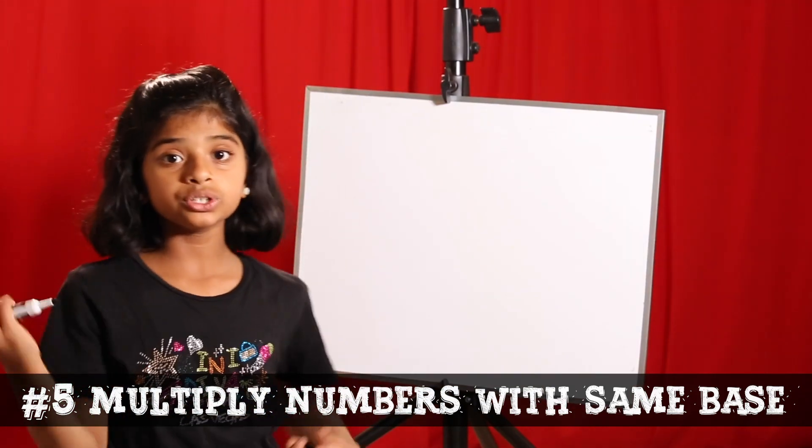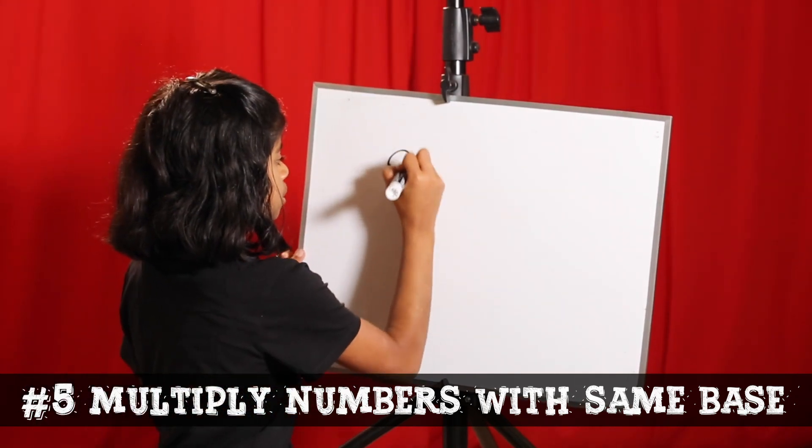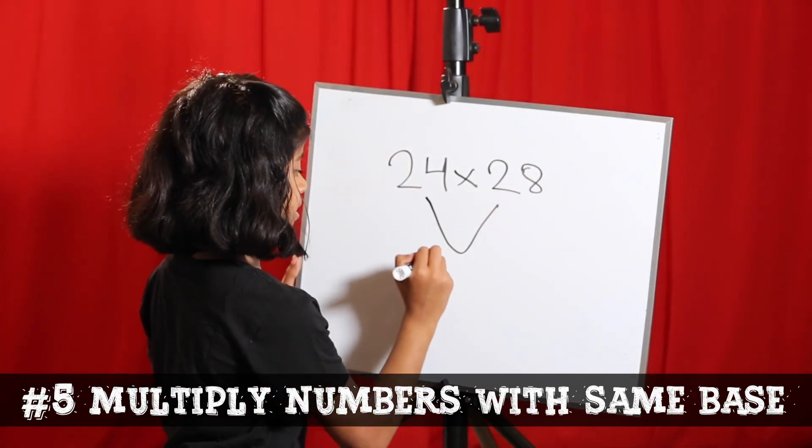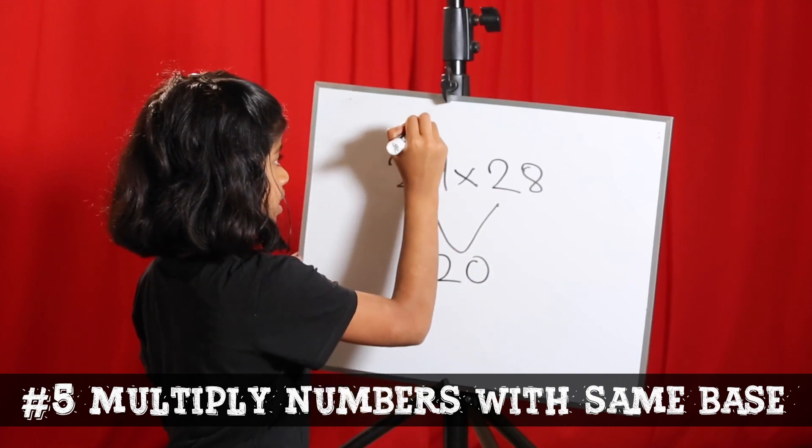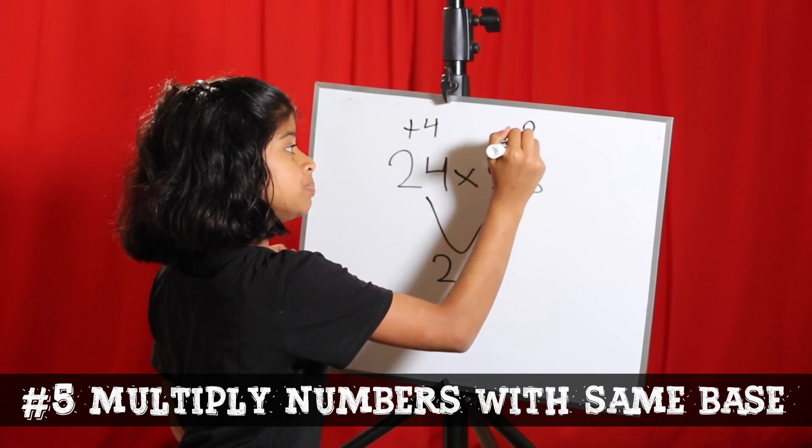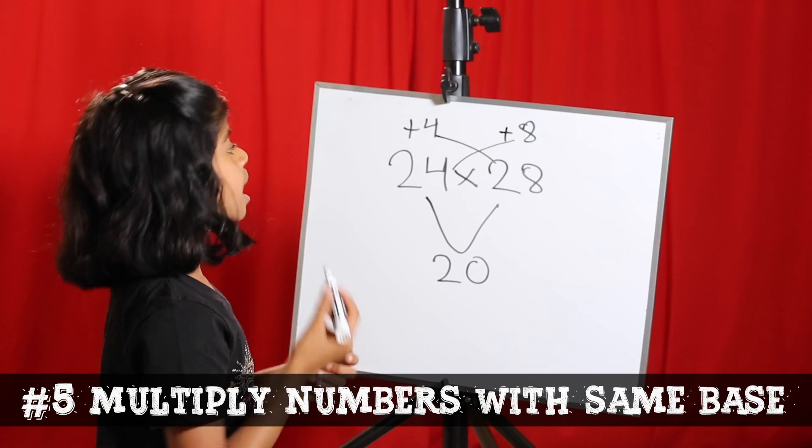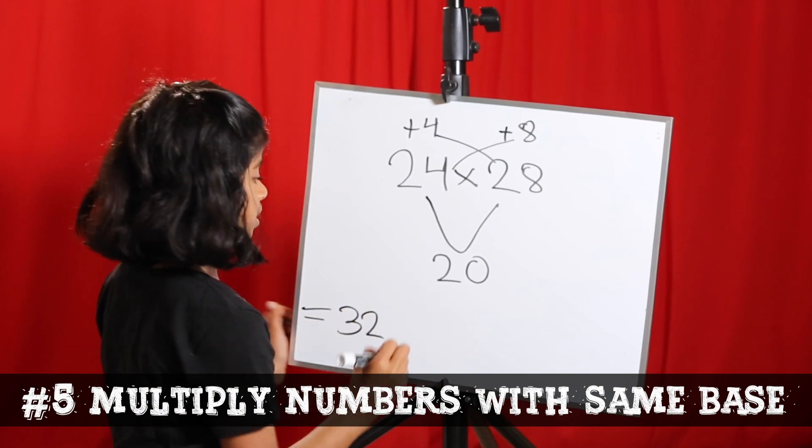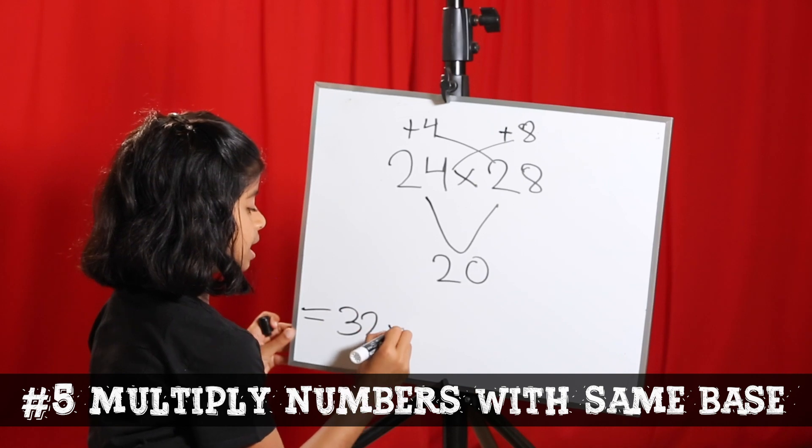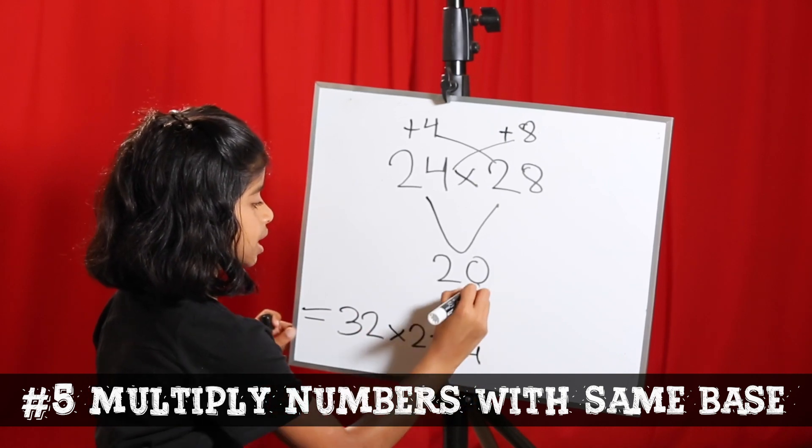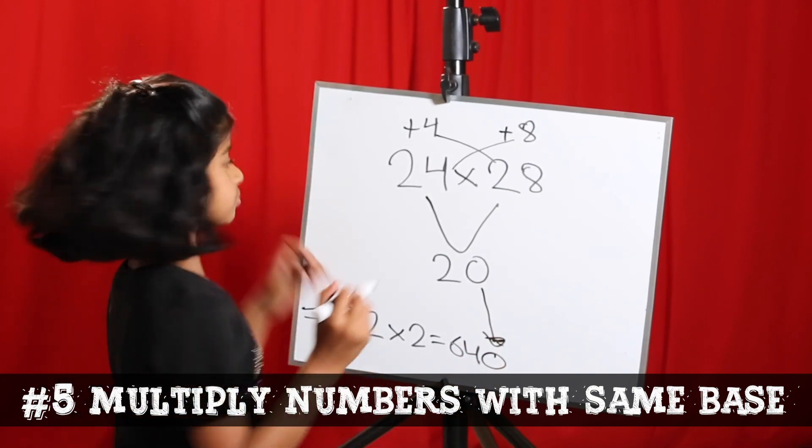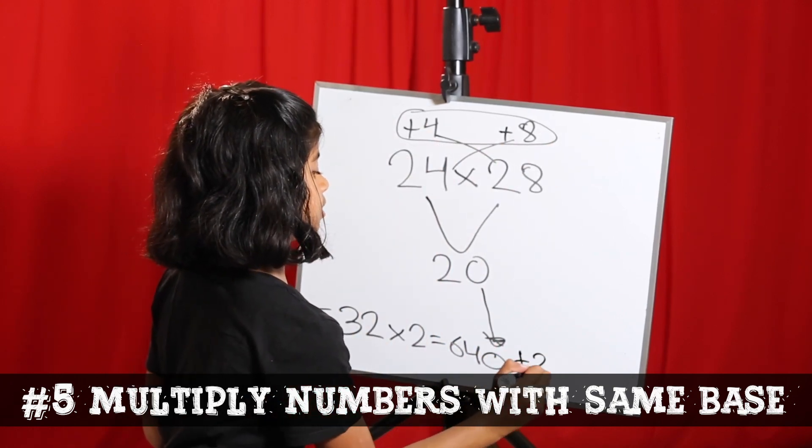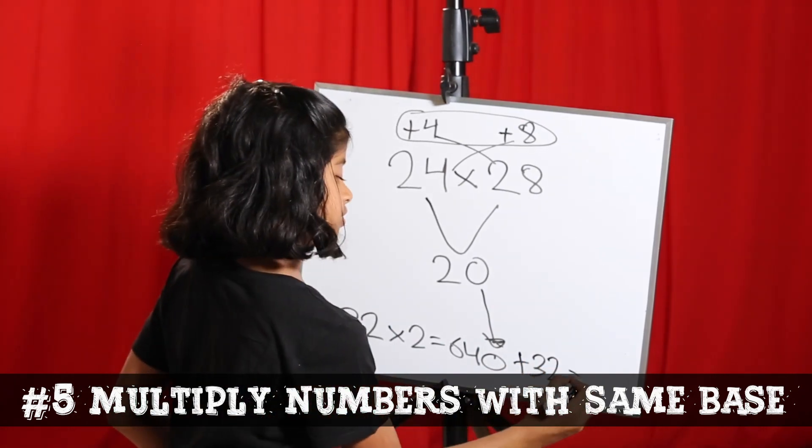Let's try with another base. I'm going to try base 20. Let's do 24 into 28. They both have the same base which is 20. Over here it's plus 4 and over here it's plus 8. Now let's add these two or these two. Either way, it's 32. Then you multiply it by 20. 32 times 2 is 64. Then you add the 0 and it's 640. Now you have to take these two numbers and multiply them which is 32. Then you add them together which is 672.